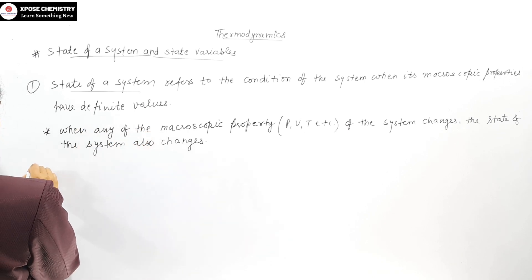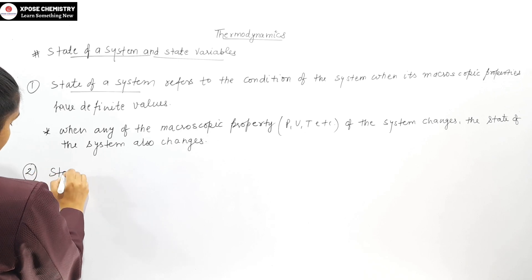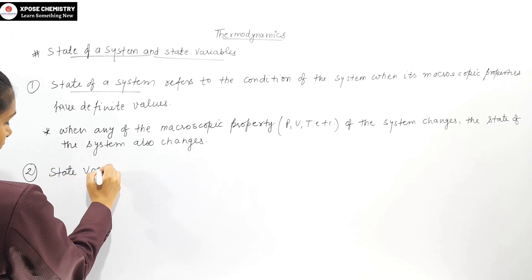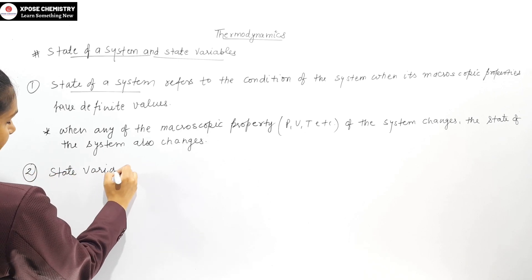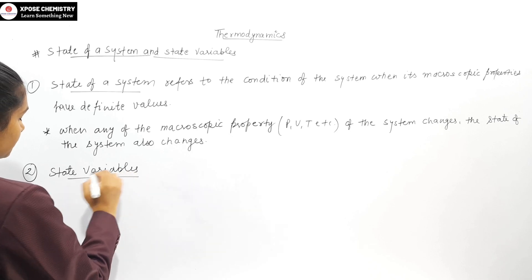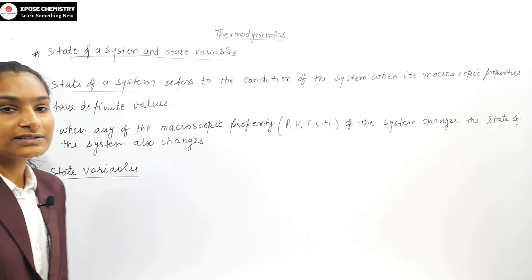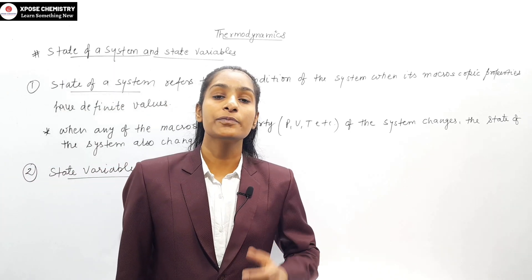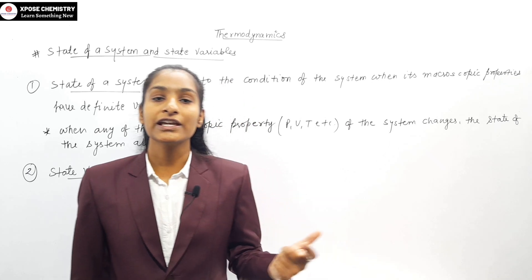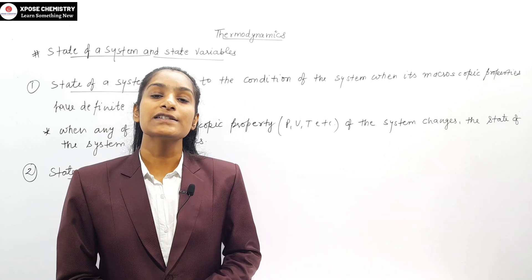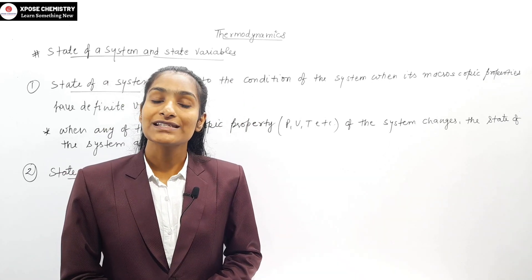Next, state variables. What are the state variables? State variables are the macroscopic properties which are required to describe the state of the system.